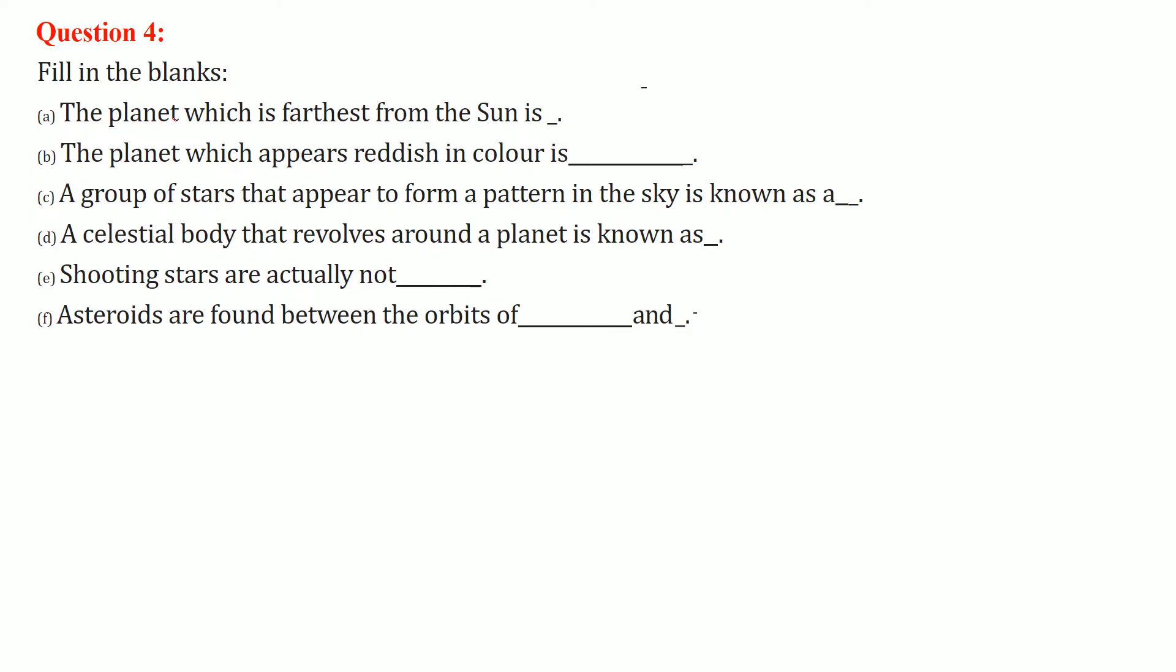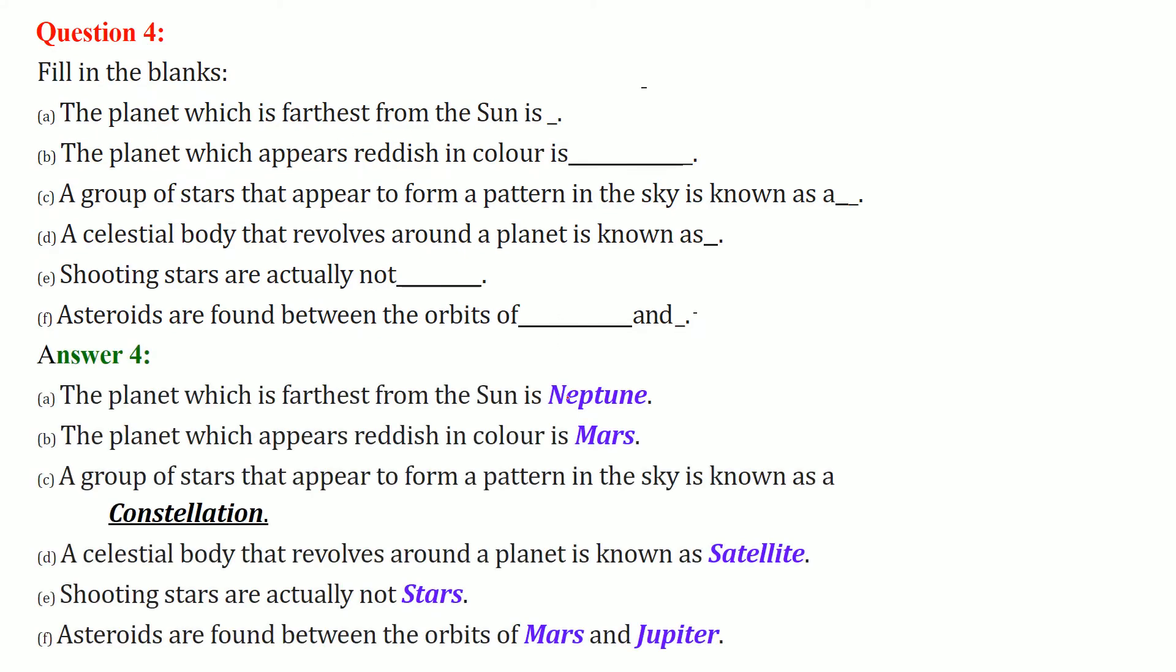Fill in the blanks. The planet which is farthest from the sun is Neptune. The planet which appears reddish in color is Mars. A group of stars that appear to form a pattern in the sky is known as a constellation.